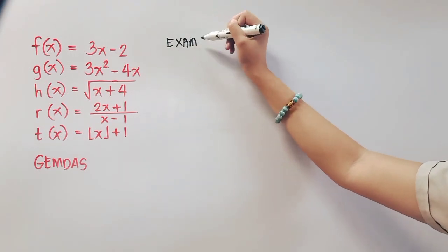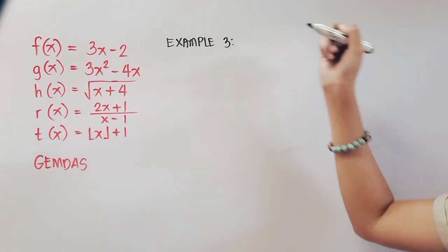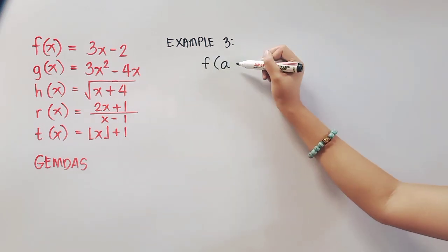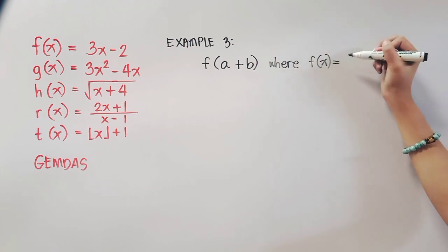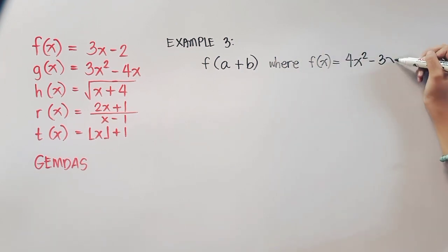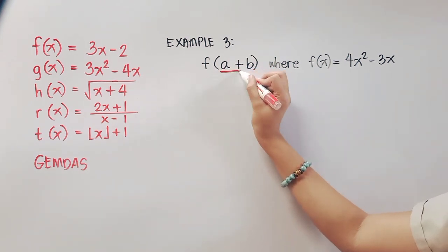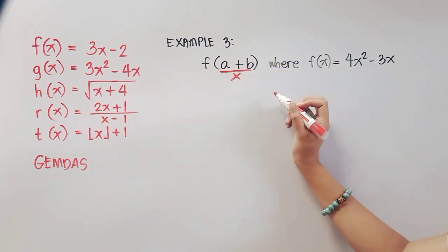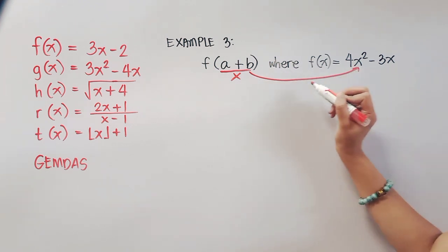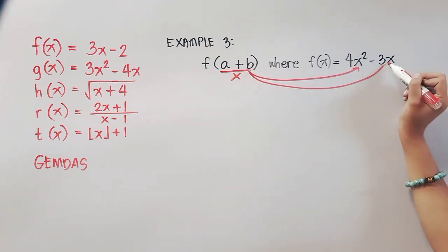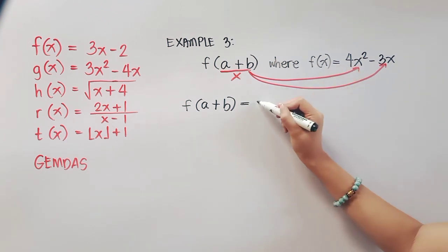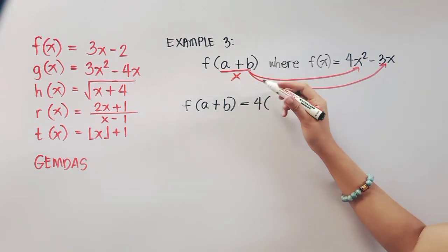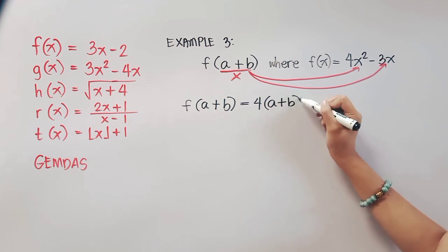We are now on example 3. So in here we have a different given, f of a plus b, where our f of x here is equal to 4x squared minus 3x. Since this is f of x, it means a plus b is our entire x, and we will substitute this one as a value of our variable x. So we'll just rewrite, this is equal to copy 4, and then a plus b is the value of our x.